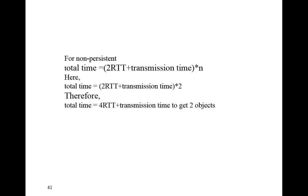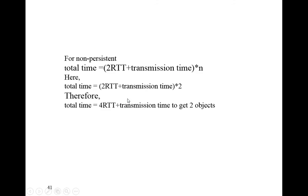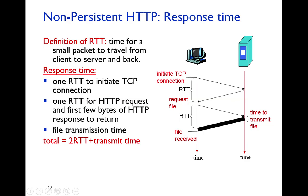To retrieve one object in non-persistent HTTP, it requires one RTT for TCP connection establishment, one RTT for the HTTP request and response, plus transmission time for the object. So for one object: two RTT plus transmission time. For n objects: n multiplied by (two RTT plus transmission time). For example, for two objects: two times (two RTT plus transmission time).